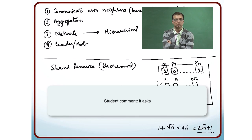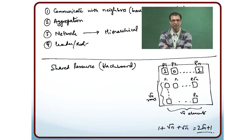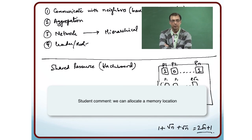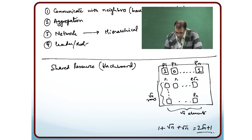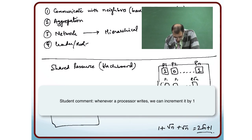It asks. How do you ask on the blackboard? You can allocate a memory location. Whenever a processor writes to it, we will increment it by 1.